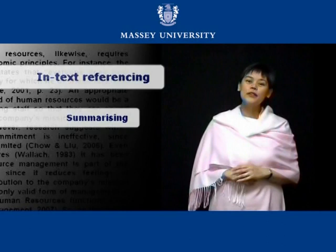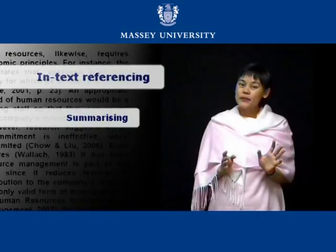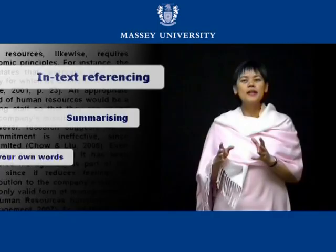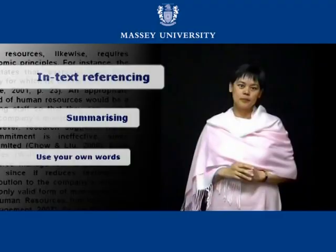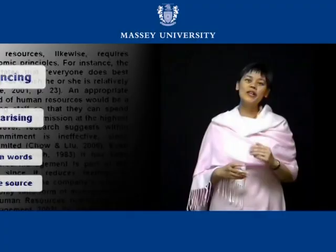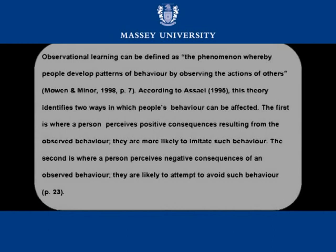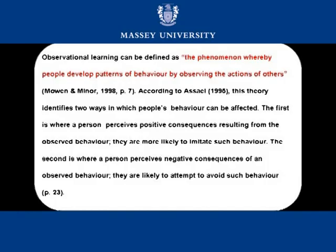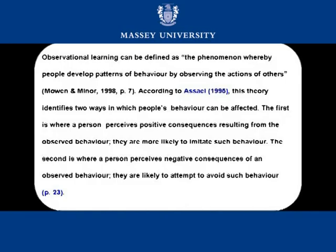Summarizing is the other form of in-text referencing. When you use someone else's ideas, concepts, or data, but not their exact words, you are summarizing a source. You discuss someone else's work in your own words using your own sentence structure. So even though you are using your own words, you are still using someone else's ideas, so you must acknowledge the source. Let's look at this example of how a direct quote differs from a summary. Here we can clearly see there is a direct quotation from Moen and Miner, followed by the in-text reference for that quotation. Then we have a summary of what was said, with the in-text reference for that summary.